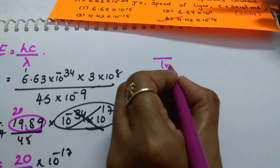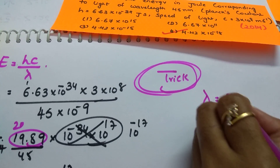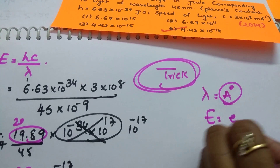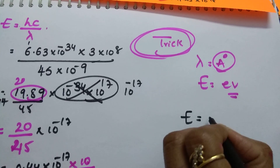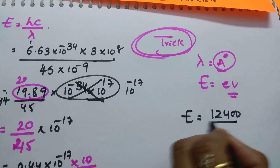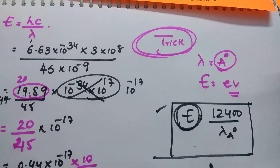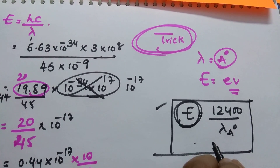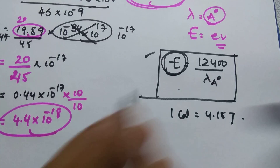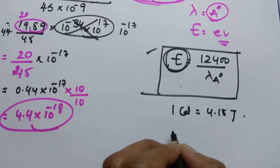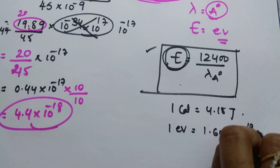One trick: whenever they give lambda in angstroms and ask energy in electron volts, no need to do all these steps. Use the simple formula: E = 12400 / λ (in angstroms), and you can easily calculate energy in electron volts. Also note: 1 calorie = 4.18 joules, and 1 electron volt = 1.602×10⁻¹⁹ joules. Use these conversions whenever needed.